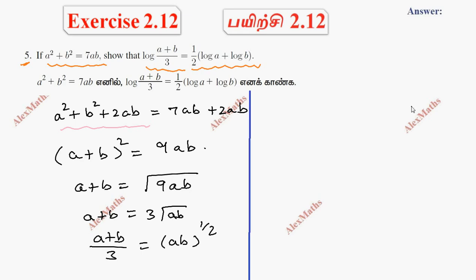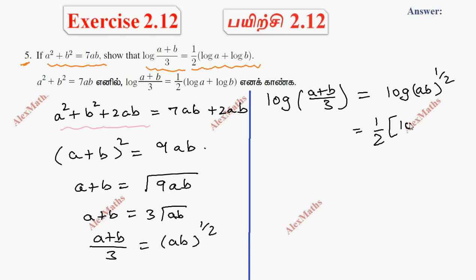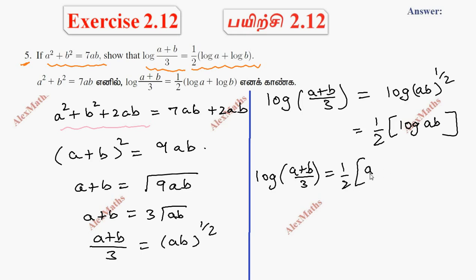Now taking log on both sides. Log of (a plus b) by 3 is equal to log of ab to the power half. The power value is equal to half, so we get log (a plus b) by 3 is equal to half times log ab. Applying the log rule: half times (log a plus log b). That's why we have log (a plus b) by 3 equals half log a plus log b.